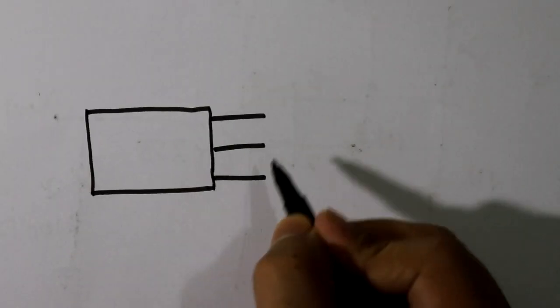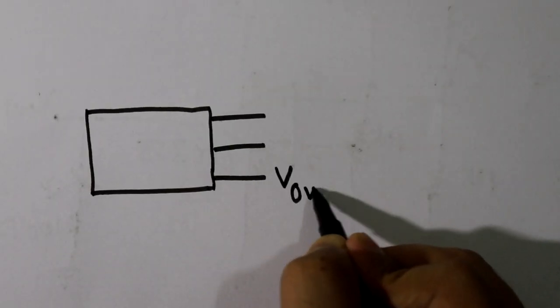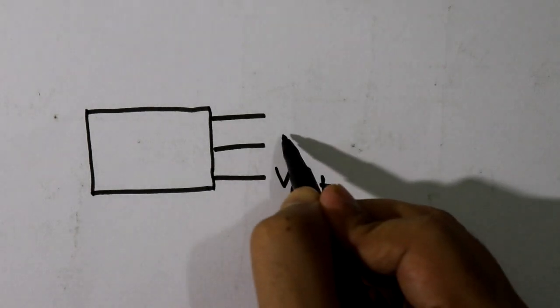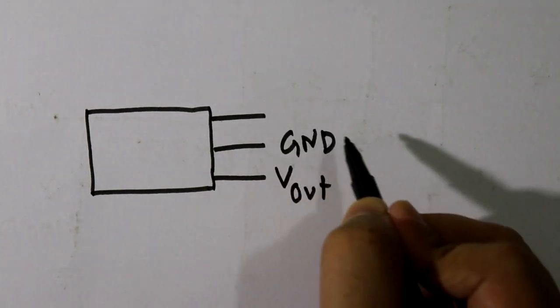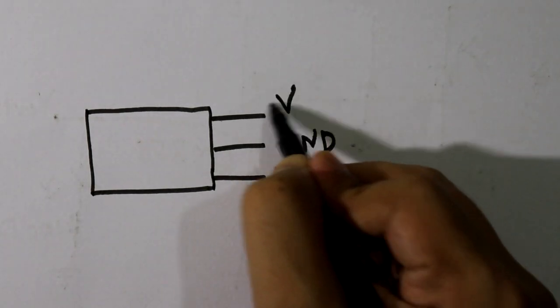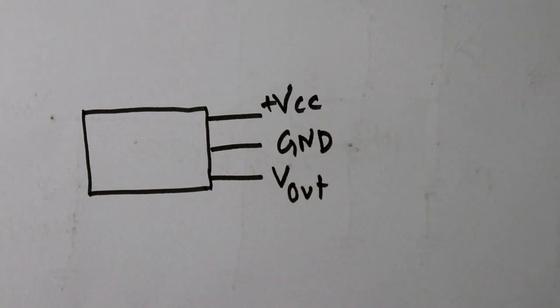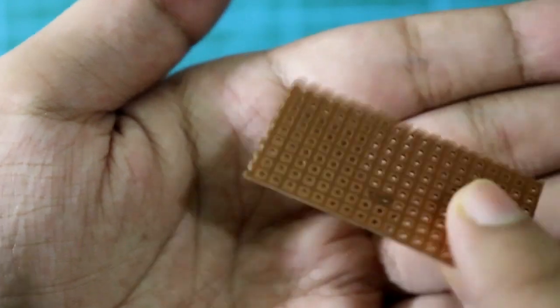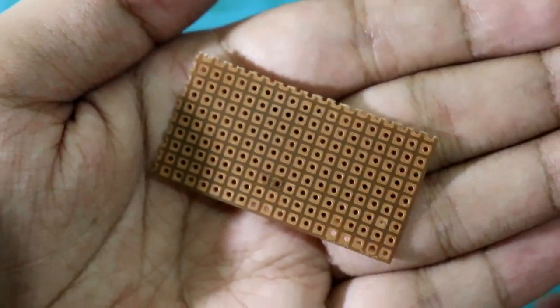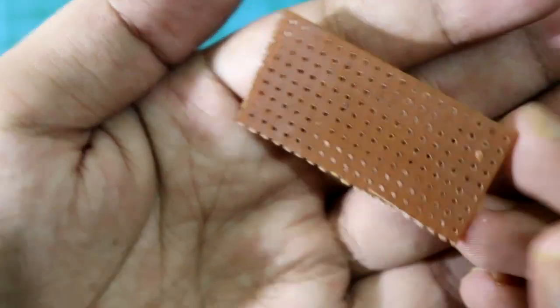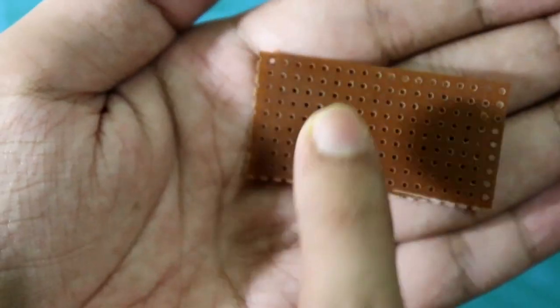In the IR sensor module it has only three pins. The first pin is Vout, the middle one is ground, and the third one is plus VCC. So we will make one Arduino IR sensor module just like this. Take a small piece of PCB as possible, as small. I have taken nine dots by 18 dots.